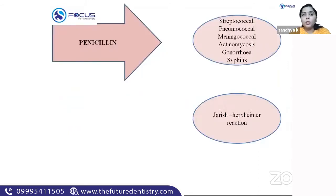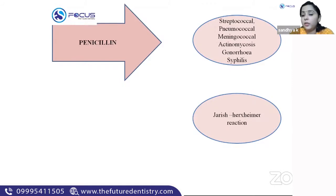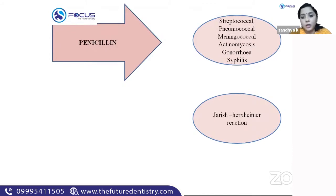A few key points on penicillin: it is effective against almost all organisms — streptococcus, pneumococcus, meningococcus, actinomycosis, gonorrhea, syphilis — but note that staphylococcus is not in that list. An adverse reaction when penicillin is given to a syphilitic patient is Jarisch-Herxheimer reaction, causing high temperature and skin reactions.